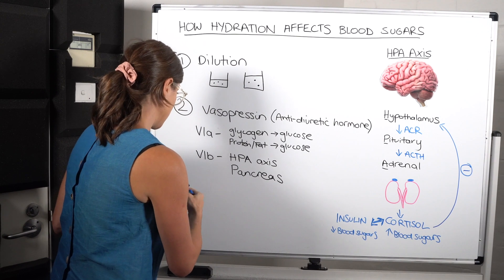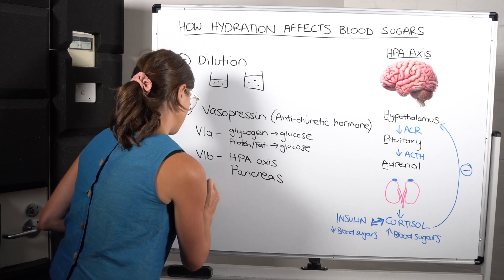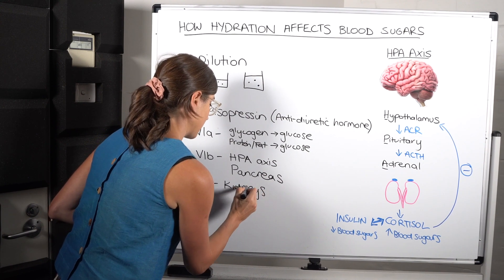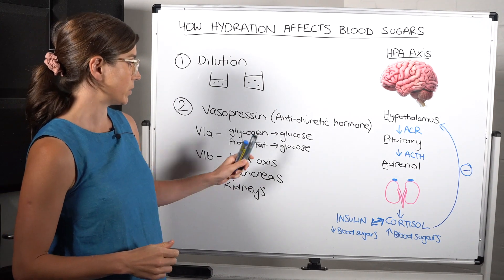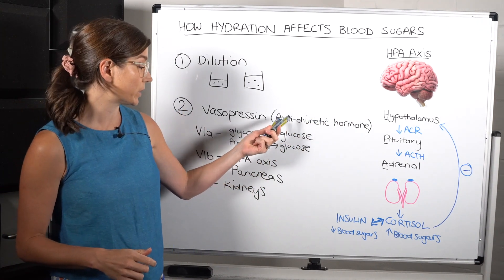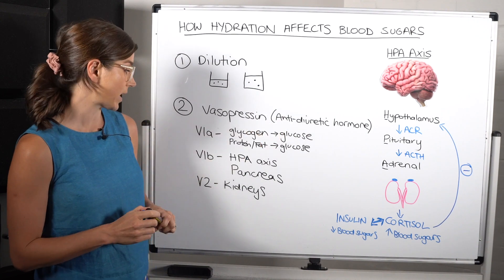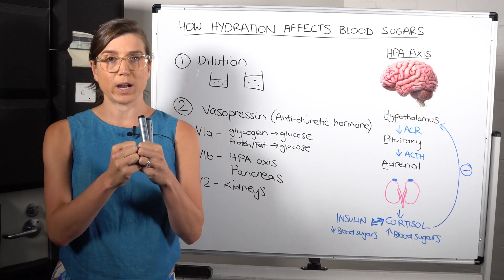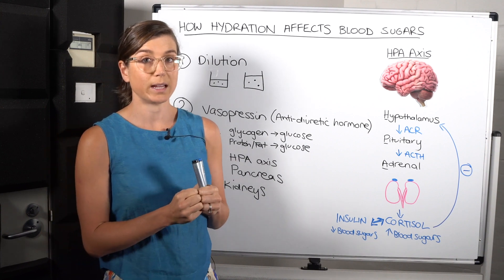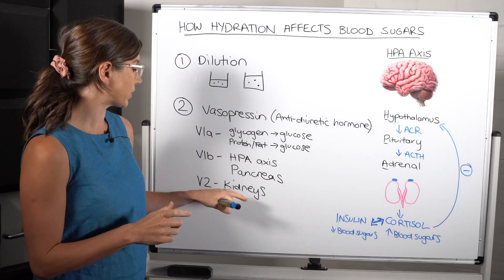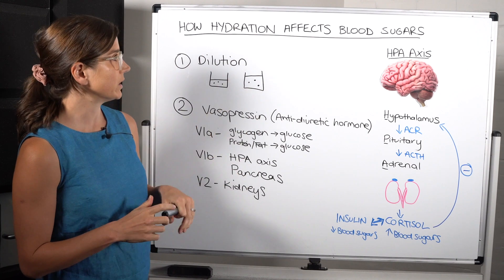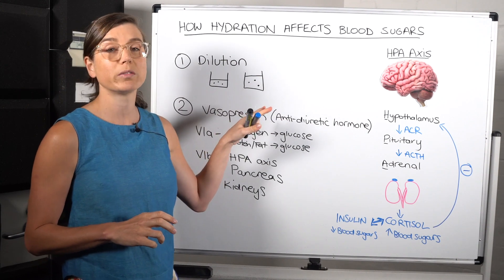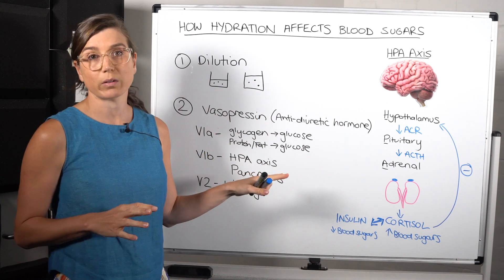And then, of course, you've got the V2 receptors, which are in the kidneys. And these receptors are responsible for what it has its name for, what it's essentially named after, so the antidiuretic effect. So it will tell the kidneys to hold onto water to try and prevent you from losing fluid to stay as hydrated as possible. So that doesn't really fit into the blood sugars so much as, I mean, that's what we thought it was the main role of vasopressin was, but now we're understanding it has all these other effects as well.